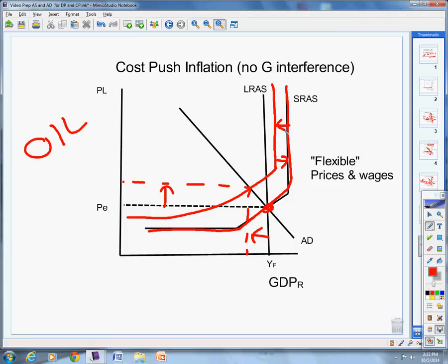So, we've got a demand pull inflation, too much aggregate demand, cost push inflation, a supply shock. And, then we've got government interference and no government interference. Make sure you understand all these things. You may need to review this one a second time. Good luck, and we'll see you next time.